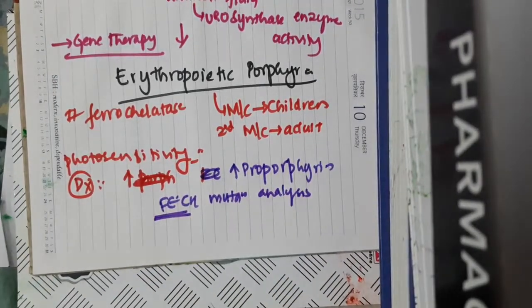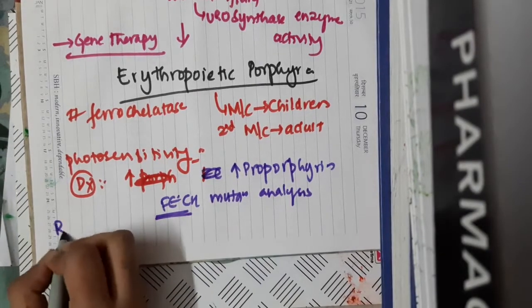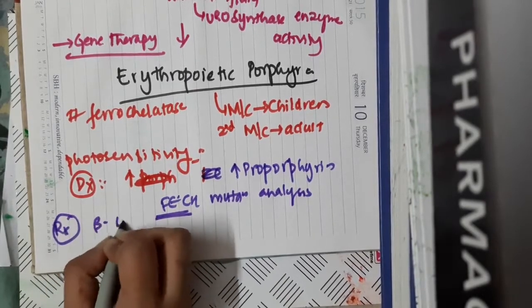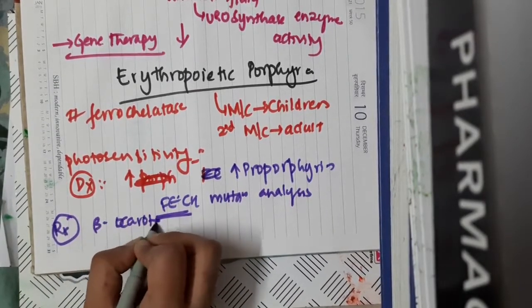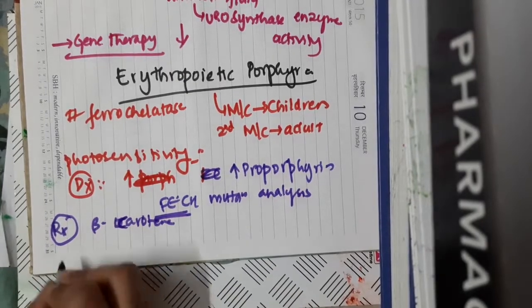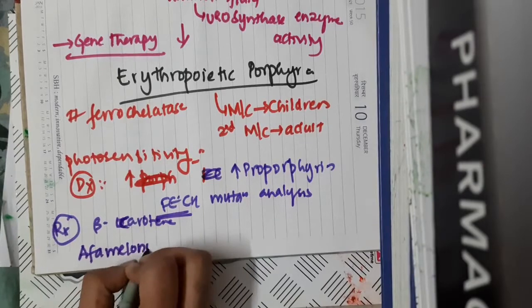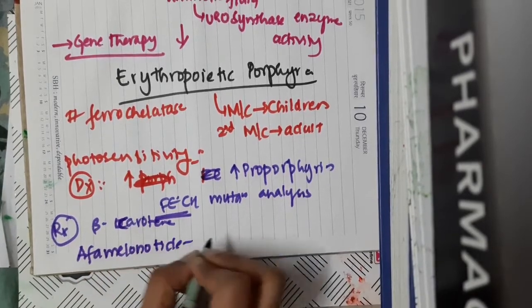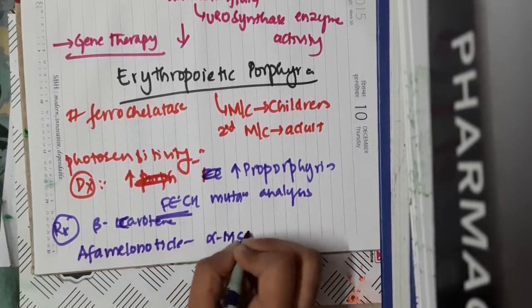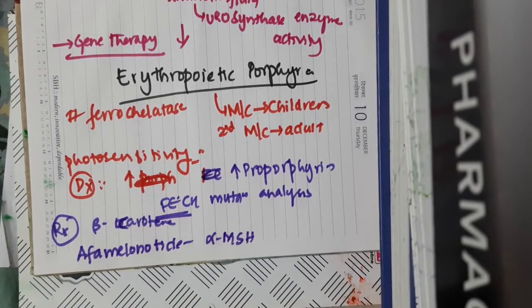For treatment of erythropoietic protoporphyria, you can give oral beta-carotene, because it will improve sunlight tolerance. Alpha-melanotide, which is an alpha-melanocyte stimulating hormone, is also tried for erythropoietic protoporphyria.